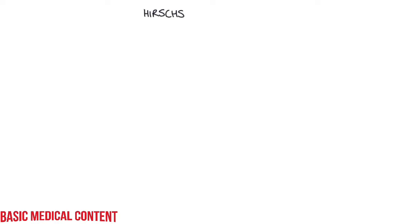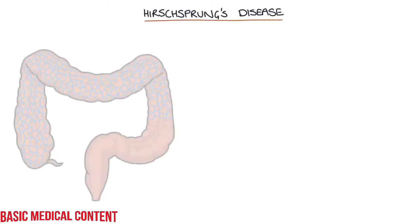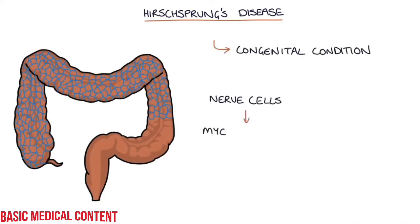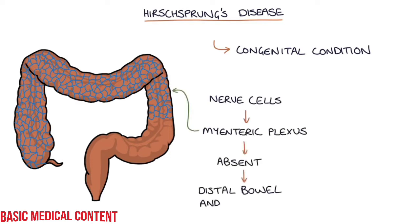In this video, I'm going to be going through Hirschsprung's disease. Hirschsprung's disease is a congenital condition where the nerve cells of the myenteric plexus are absent in the distal bowel and rectum.